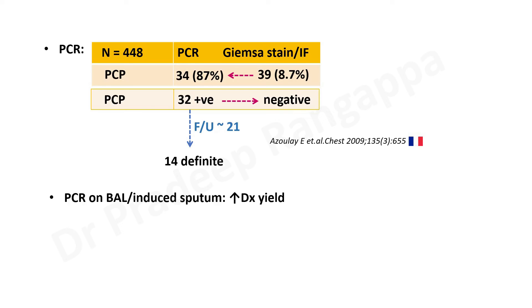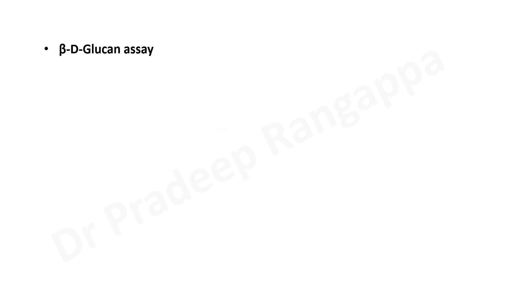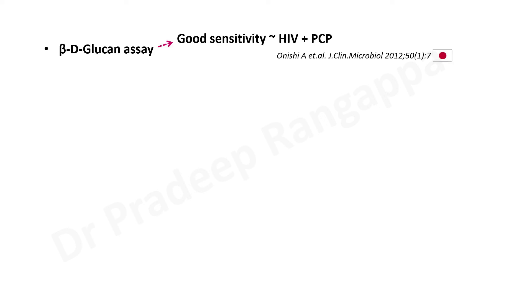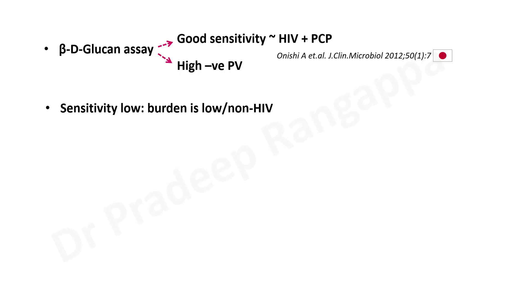Now, beta-D-glucan is a point I want to discuss, as not many may be fully aware it is a reasonable tool. In our patient, we couldn't do BAL due to patient consent and high risk of requiring ventilation, and he wouldn't produce sputum. So the only surrogate test we could do was a beta-D-glucan assay. A study from Japan showed good sensitivity in HIV patients with PCP and a high negative predictive value — if negative, it rules out PCP; if positive, it suggests PCP is likely. However, sensitivity falls in non-HIV where organism burden is lower.